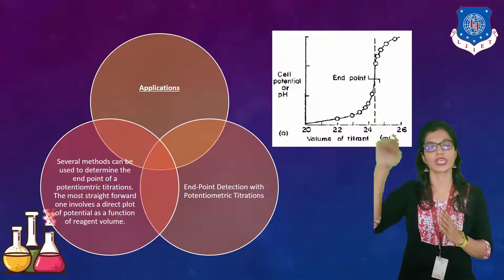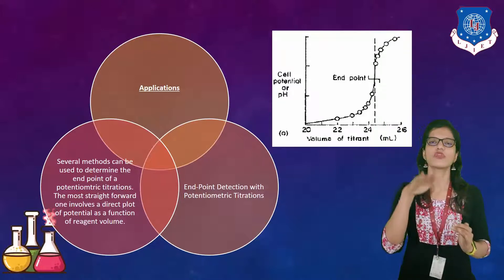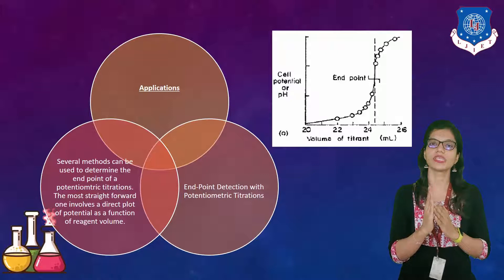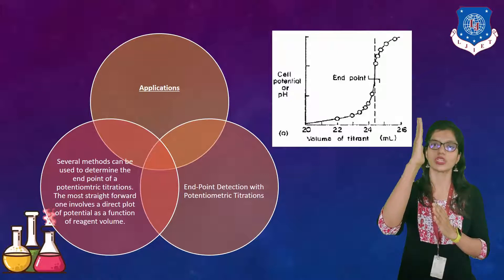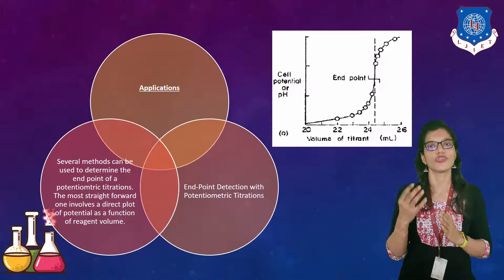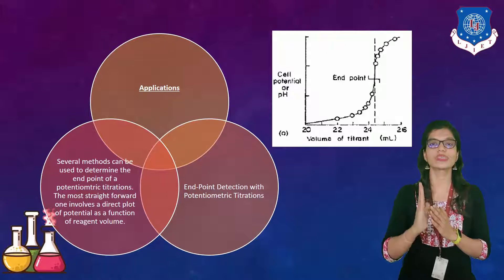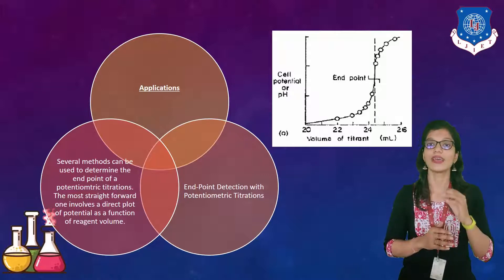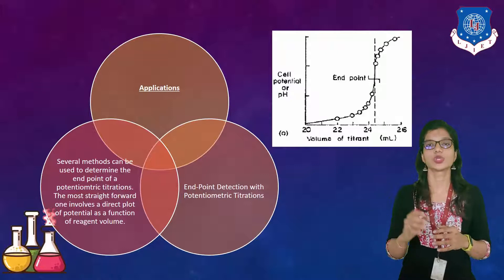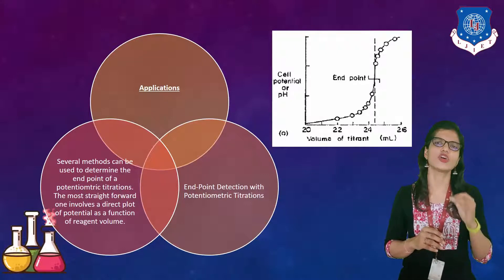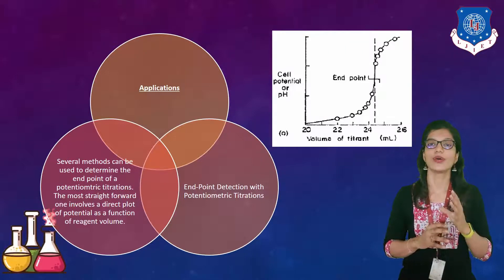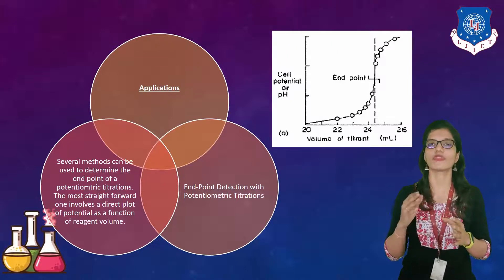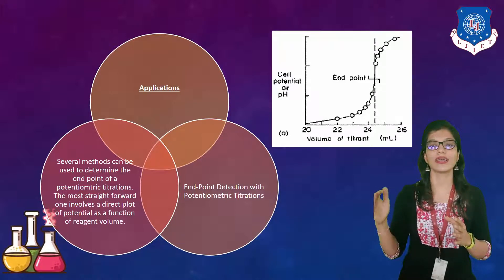Afterwards it suddenly changes again. The graph from left to right shows a steep rise, which is basically due to a continuous increase in cell potential even as you add small increments of titrant. It gives you a clear end point determination. This is also known as the determination of end point using potentiometric titration.